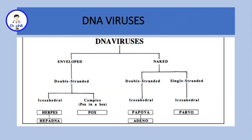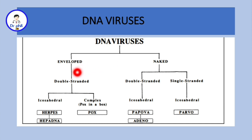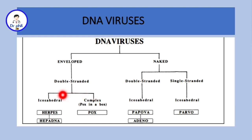Here is a basic classification of the DNA viruses — they can be enveloped or naked. All enveloped DNA viruses are double-stranded. In terms of symmetry, we have icosahedral and complex. Complex gives us pox — pox in a box. For icosahedral, we have herpesvirus and hepadnavirus.